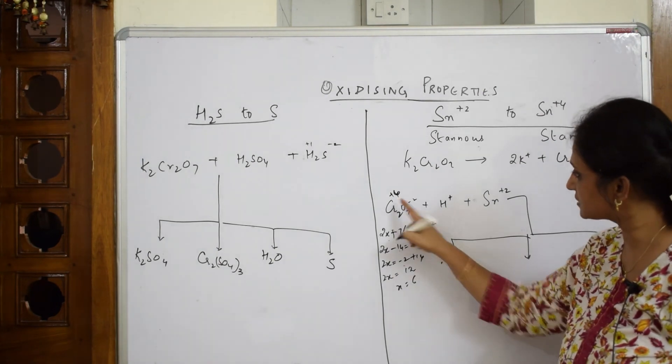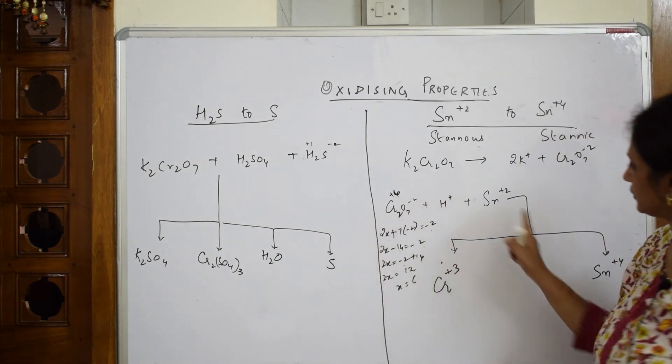Now what happened when this is undergoing oxidation reaction? Cr⁶⁺ is getting converted to Cr³⁺. What happened now? It has gained electrons. So this is from +6 to +3, it has gained 3 electrons. Now your Sn²⁺ has lost 2 electrons. This is undergoing oxidation reaction. And this chromium is undergoing reduction reaction.